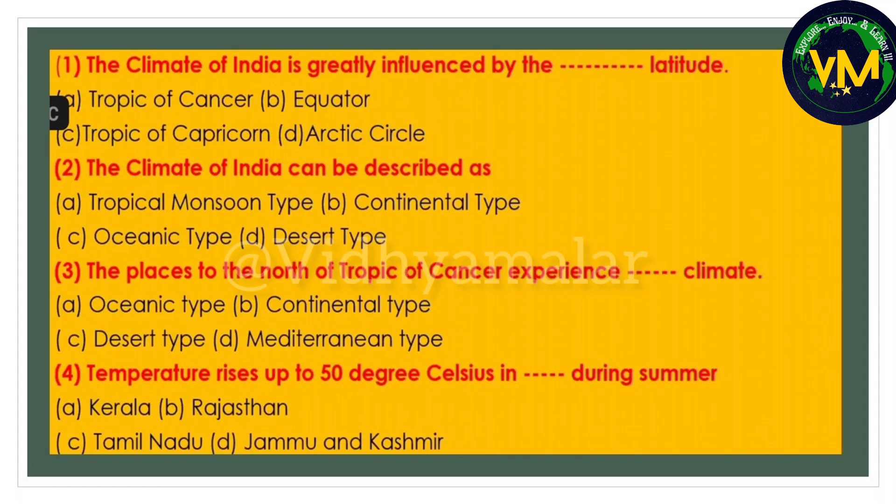Now look at these sample questions from the climate of India chapter. The climate of India is greatly influenced by dash latitude. Let's use the elimination method. Option A: Tropic of Cancer - we know it passes through the center of India. Option B: Equator - it is to the south of India, so definitely not the answer. Option C: Tropic of Capricorn - it is in the southern hemisphere below the equator, so also not the answer. Option D: Arctic Circle - it is near the north pole. So the most apt answer is Tropic of Cancer.